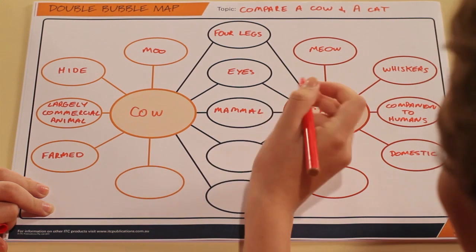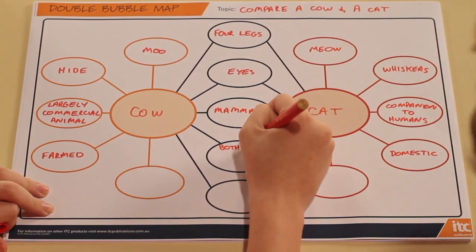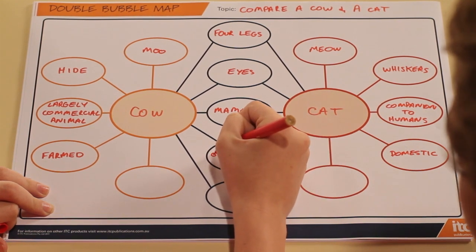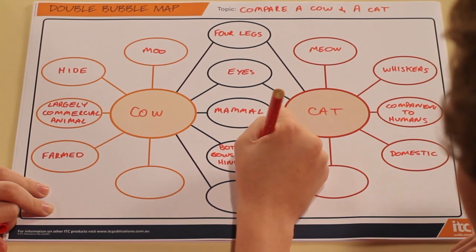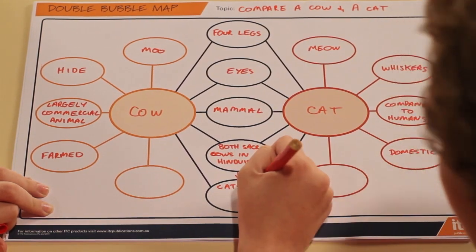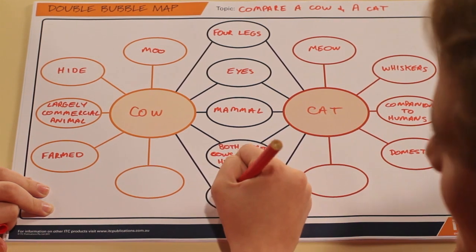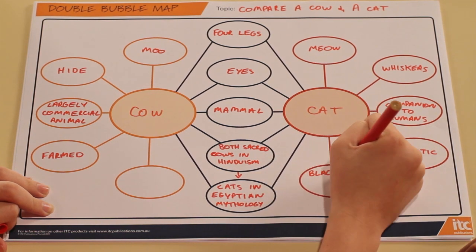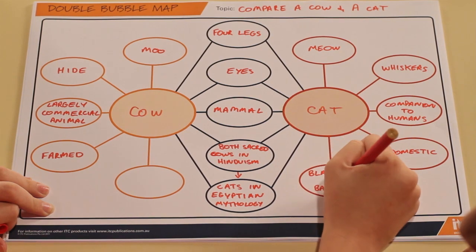Red team have not only looked at the behaviour, they've looked at how humans relate to the animals. Cats are companion animals, while cows are predominantly commercial animals. They've also looked at cows and cats as religious and cultural symbols — identifying cows as being sacred to Hindu religion, while cats are honoured in Egyptian mythology. They've also noted how black cats can sometimes be seen as bad luck.